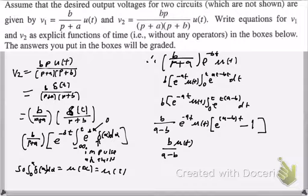Moving on, simplifying this further, by multiplying the E to the negative AT into the brackets there, we end up getting B over A minus B times the unit step function times E to the negative BT minus E to the negative AT, which is our final answer.